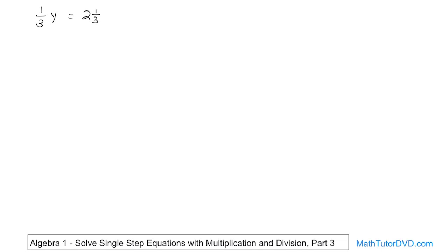So the first step along the way is we want to rewrite this as one-third times y is equal to, what do you do here? Two times three is six, plus one is seven, so that's seven-thirds. Now that is going to be a lot easier to deal with, believe it or not.